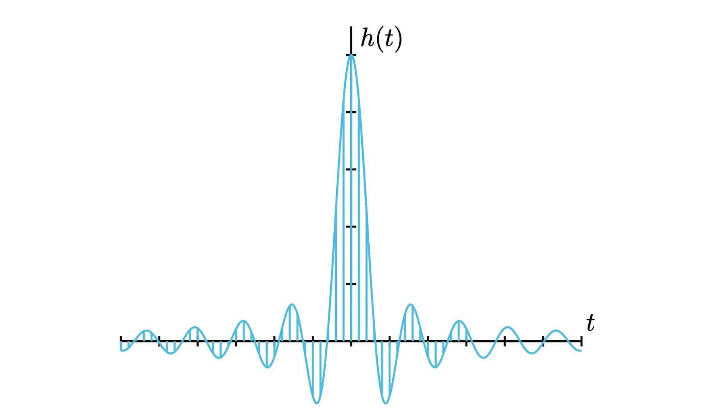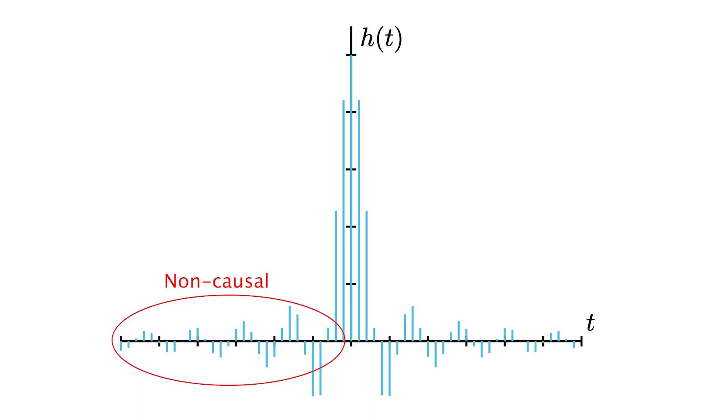Remember, this is the time domain representation of the ideal low pass filter. The main issue with this ideal filter — the reason why we can never implement it in real life — is that it's non-causal. For negative times, this filter is not zero. So how do we actually get around this? How do we solve this issue?